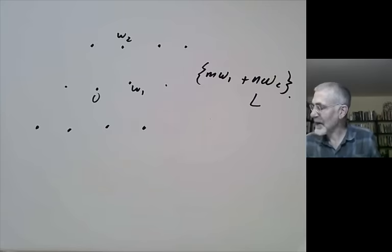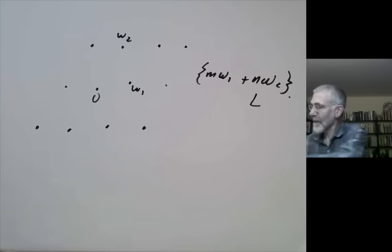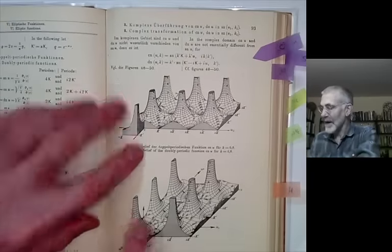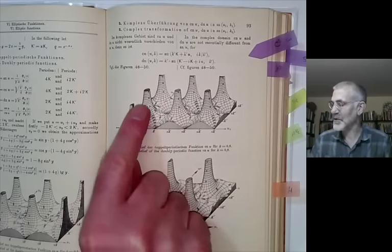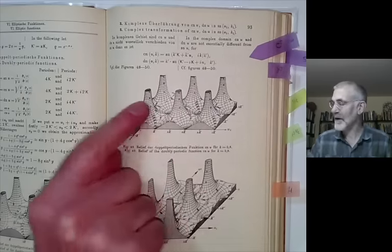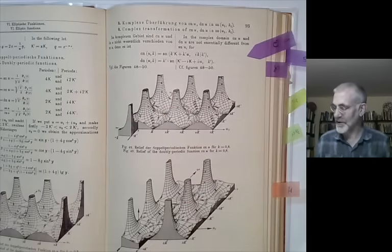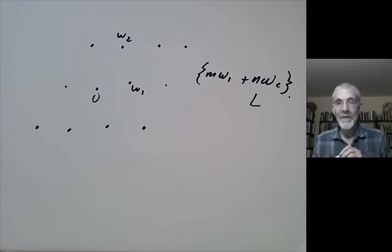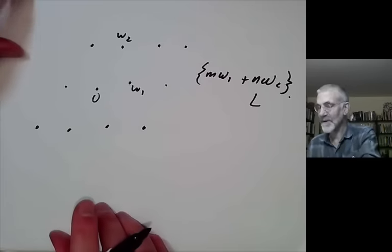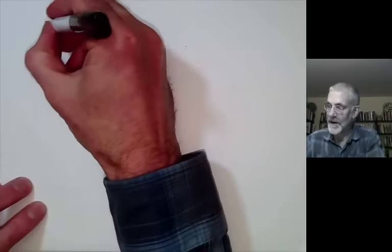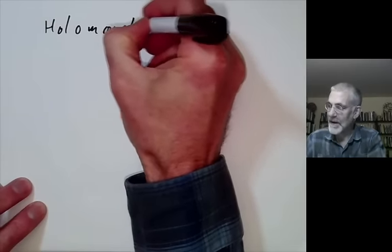Here is a picture of an elliptic function from the book by Jahnke and Emde — one of Jacobi's elliptic functions. You can see it's periodic in one direction and also periodic in another direction. So what I want to do this lecture is basically find all elliptic functions. The first question is: can we find any holomorphic elliptic functions?